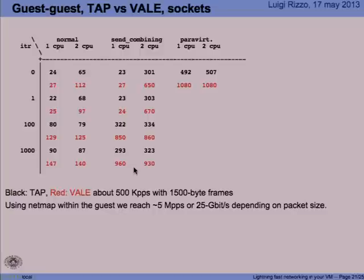This test is done between two FreeBSD guests using NetSend and NetReceive — these are part of the NetRate tools for sending and receiving UDP packets. These numbers are for 64-byte packets. With 1,500-byte frames, we reach about half a million packets per second, which amounts to about 5 or 6 gigabits per second.